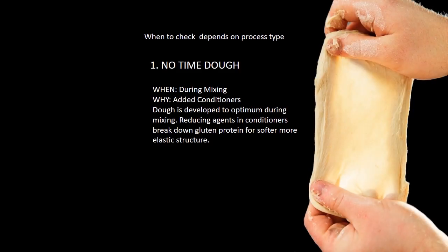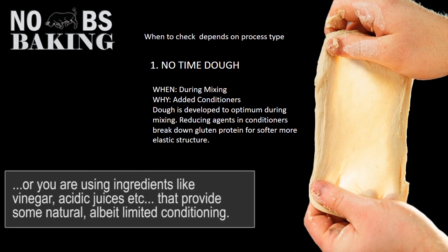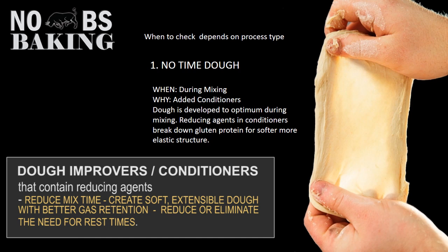As I showed in the first video clip, mixing your dough generally doesn't give you that really beautiful window pane test unless you are adding conditioners. With a no-time dough process you add conditioners that have reducing agents. These reducing agents help soften or break down the gluten structure a little bit, providing a more elastic, more extensible kind of dough, and it's through this type of process and the addition of conditioners that you're able to fully check your window pane directly after mixing.